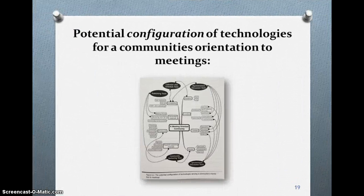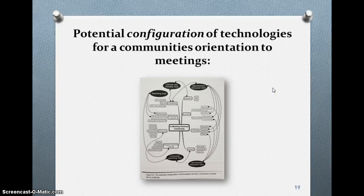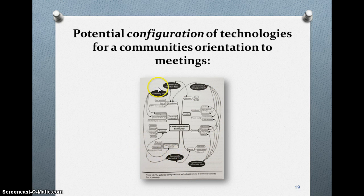Here you can see a potential configuration of technologies from your text — it's for a community's orientation to meetings. As you can see, everything works together: working as community, nurturing tools, publishing tools, and calendar all make a community function.